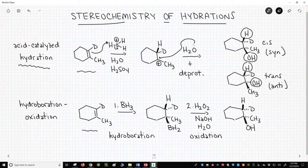That gives both the added H and BH2 cis. This is the sin product. BH3 adds through a sin addition.